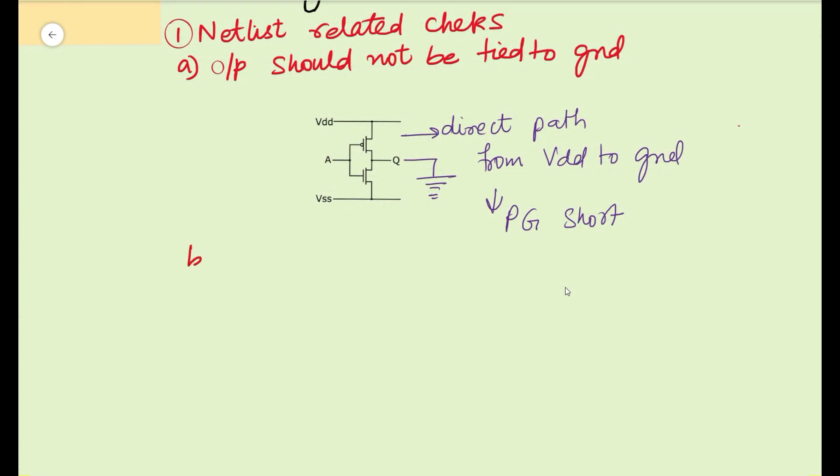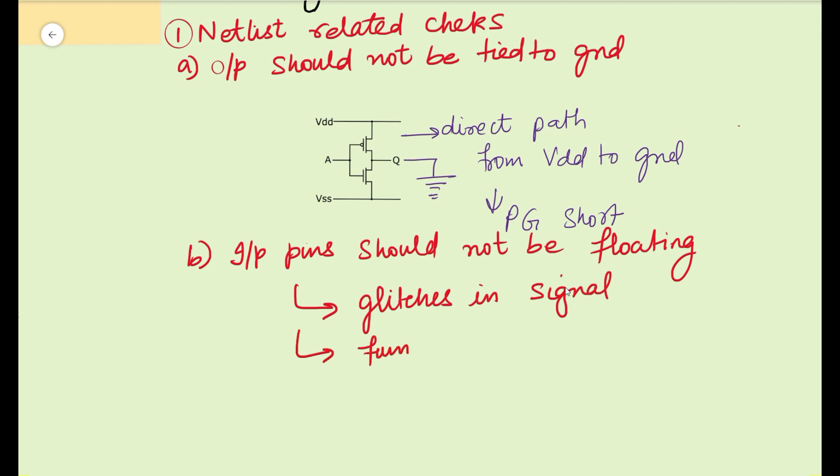The second netlist related check is inputs should not be floating. If an input is floating, it could lead to glitches in the signal. Since the input is floating, we don't know what the input will be, so the functionality of the chip cannot be guaranteed, leading to functionality issues. Because of floating inputs, there are high chances of high dynamic power consumption.